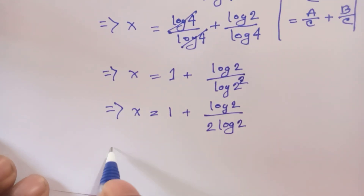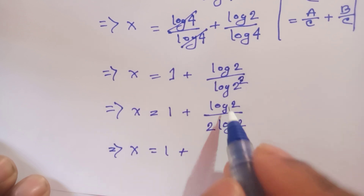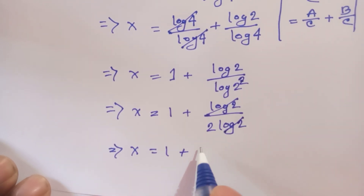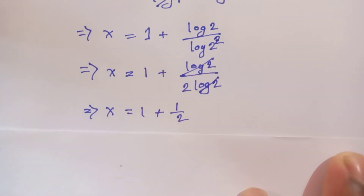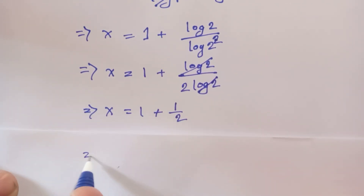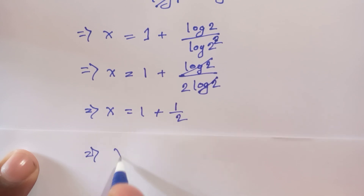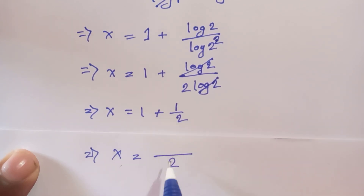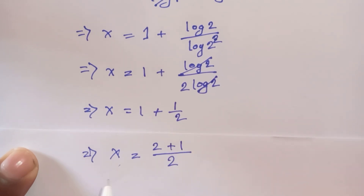The log of 2 cancels with log of 2, giving 1 over 2. So x is equal to 1 plus 1 over 2. Taking the LCM of 2, we get 2 over 2 plus 1 over 2, therefore x is equal to 3 over 2.